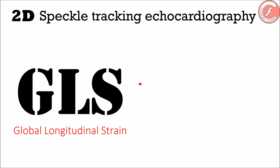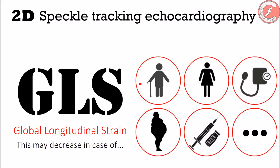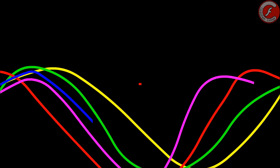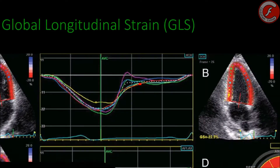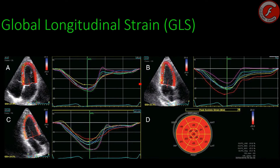We can say that the global longitudinal strain is lower in elderly patients and women, in patients with arterial hypertension, obesity, and diabetes mellitus, among others. Although at first glance it could look tricky, the global longitudinal strain has demonstrated having much less variability in its measurement than the ejection fraction or the diastolic function, parameters regularly used in clinical practice.